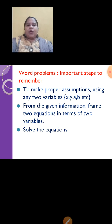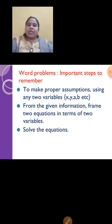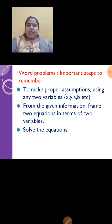Whenever we are solving word problems, what are the important steps to remember? Whether it is linear, which you are learning in this chapter, or quadratic, which you will be learning in 10th standard, these steps will be common. First, make a proper assumption using any of the 2 variables — x, y, a, b, z, w, whatever. Then from the given information, read the question properly part by part and frame 2 equations in terms of those variables. Last step is of course to solve the equation. I have taught you 2 methods: elimination method and substitution method. You can use any method in the exam, whichever you find easy.